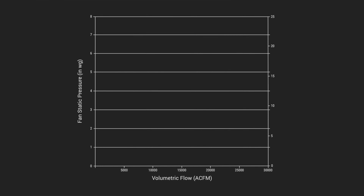This resistance, quantified as static pressure, is plotted on the system resistance curve, showing its resistance to each quantity of airflow. So when you ask for a fan that can produce 20,000 CFM at 5 inches of static pressure, that means you're planning to install a fan in a system that will resist the fan's 20,000 CFM with 5 inches of static pressure.